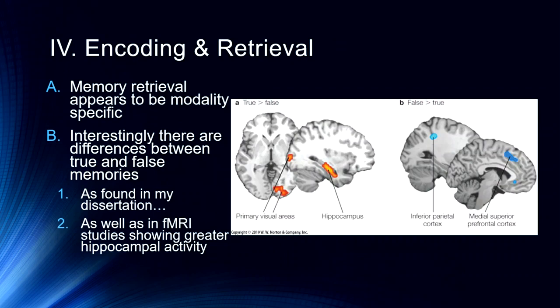This dovetails with fMRI studies showing greater hippocampal activity for true versus false alarms. You can see hippocampal and visual areas are more involved for true memories. For false alarms, the areas more likely to be active are medial prefrontal cortex and inferior parietal cortex — probably decision areas where participants are trying to determine whether an item is true or false — and some of those same areas are associated with source memory.